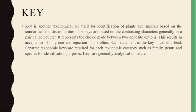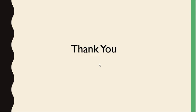Another taxonomical aid is the key. A key is used for identification of plants and animals based on similarities and dissimilarities. Keys are based on contrasting characters generally in a pair called a couplet, representing a choice between two opposite options — resulting in acceptance of one and rejection of the other. Each statement in the key is called a lead. Separate taxonomic keys are required for each taxonomic category such as family, genus, and species. Keys are generally analytical in nature. These are some examples of taxonomical aids. Thank you, hope you liked the video.